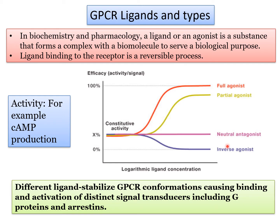An inverse agonist is a ligand that inhibits constitutive receptor activity. These terms explain the dynamics and kinetics of GPCR agonist binding and signal transduction. Other physiological mechanisms governing protein-ligand association — such as binding kinetics, free energy, enthalpy, entropy, and the different forces driving protein-ligand binding — are beyond the scope of this lecture and may be discussed in other courses.